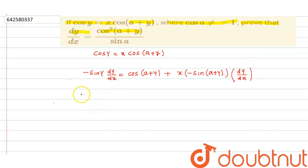So dy/dx can be given as: is equal to cos(a + y) upon x sin(a + y) minus sin y.